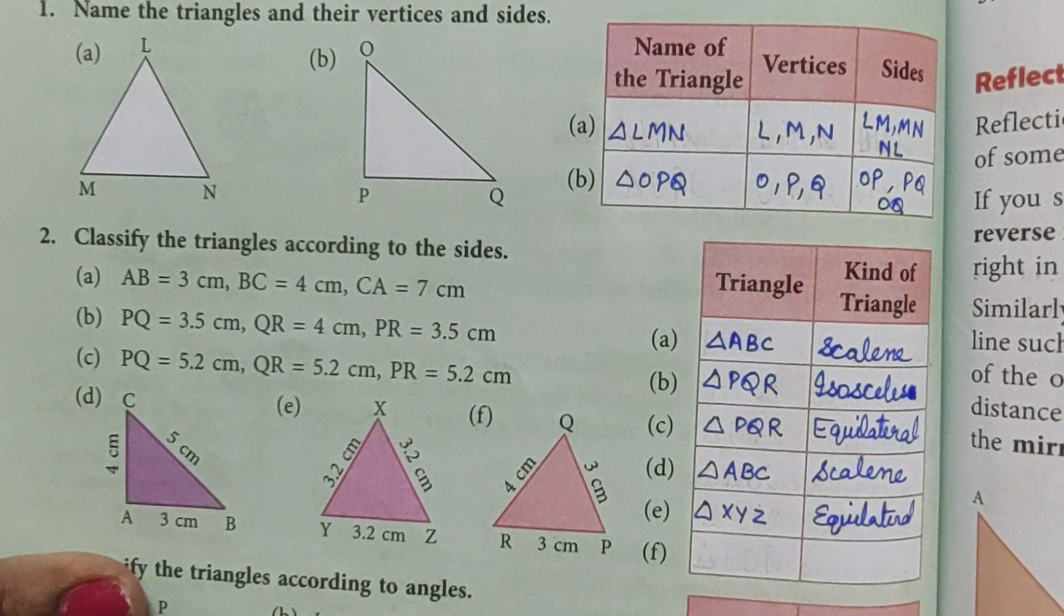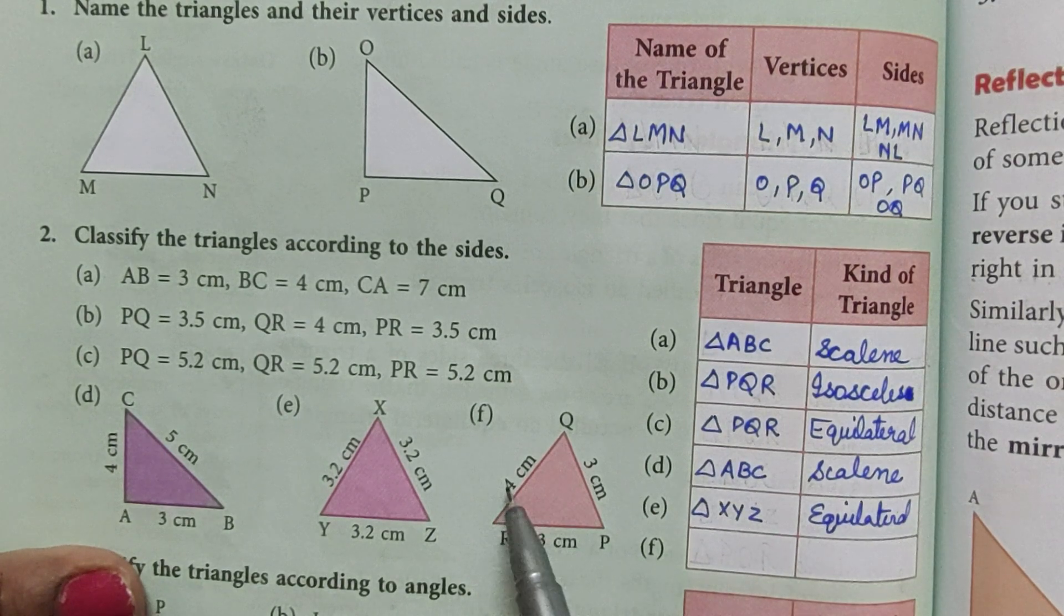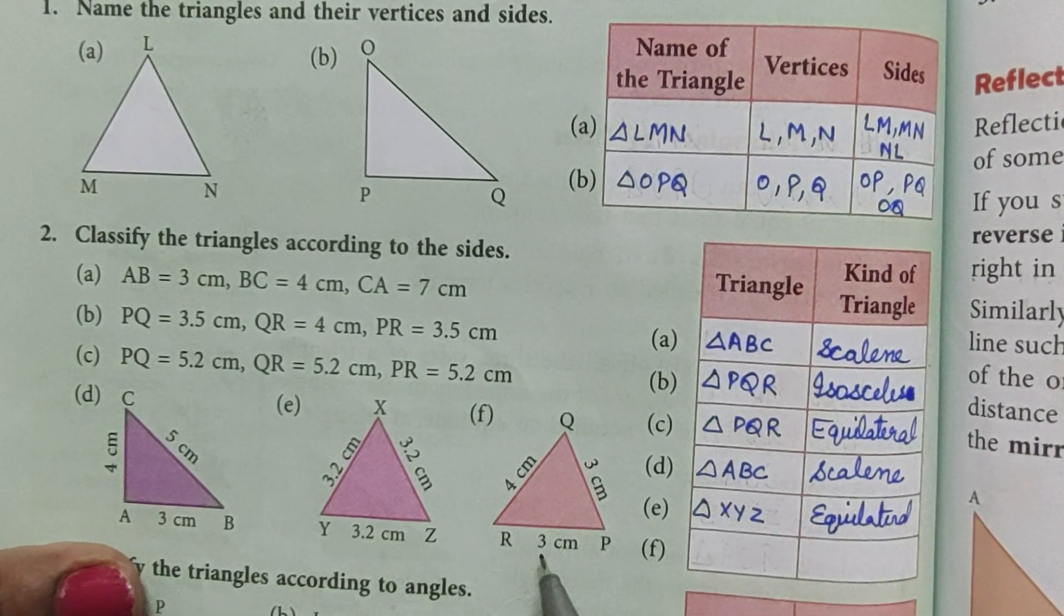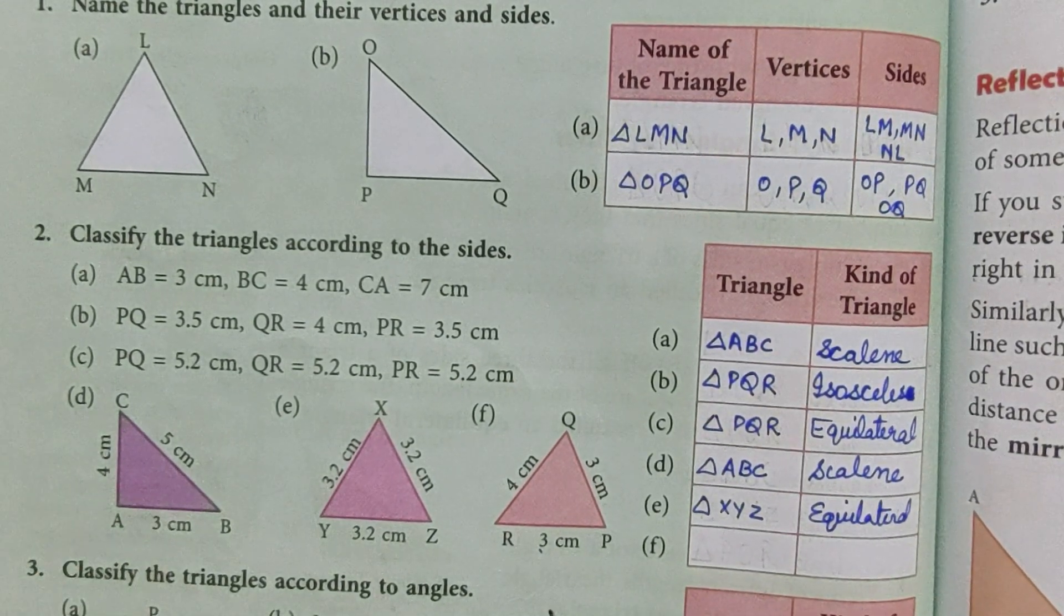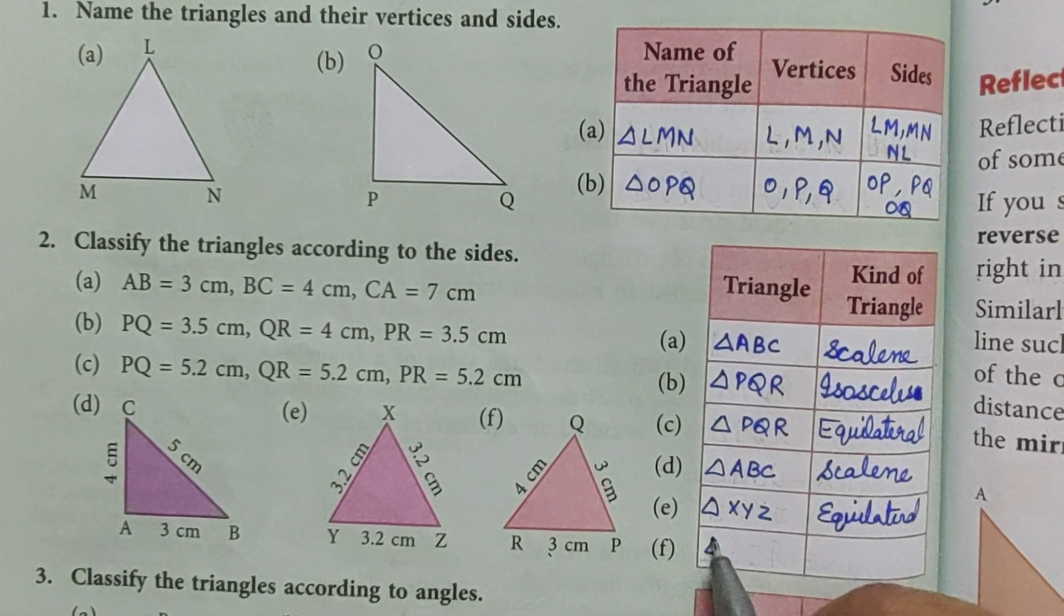Now part F, 4 centimeter, 3 centimeter, 3 centimeter. Two sides are of equal length, so triangle is isosceles triangle.